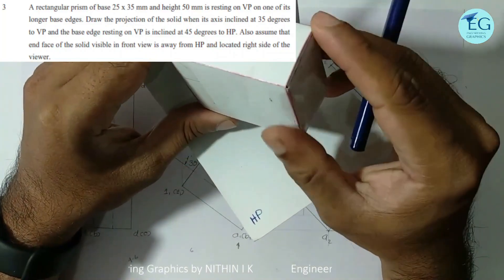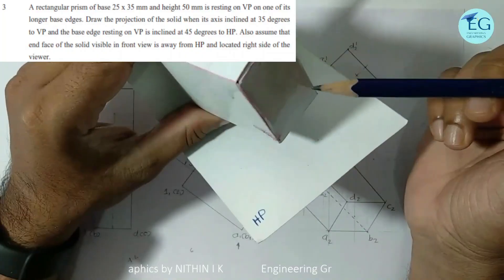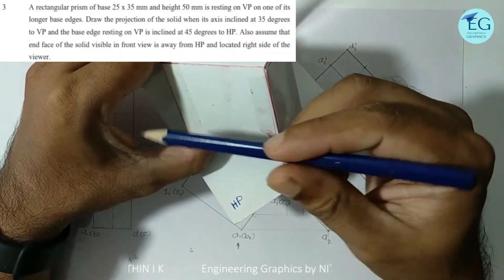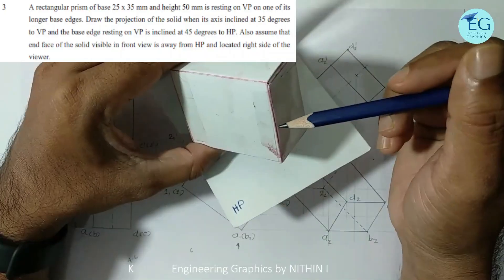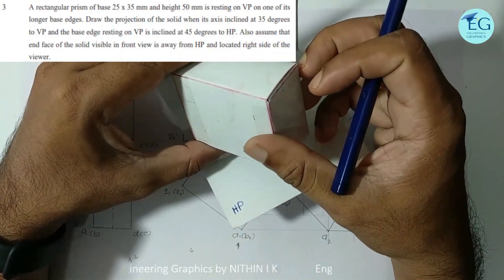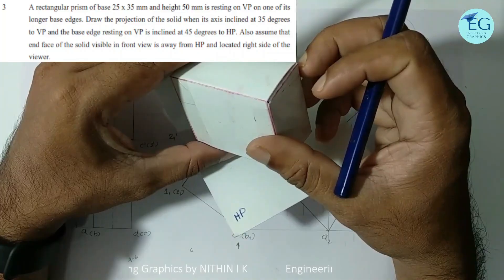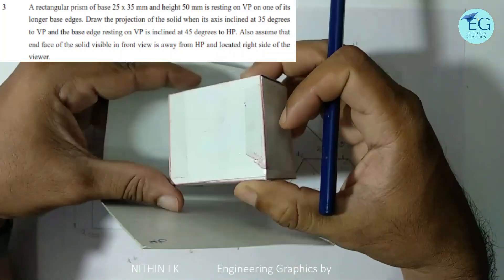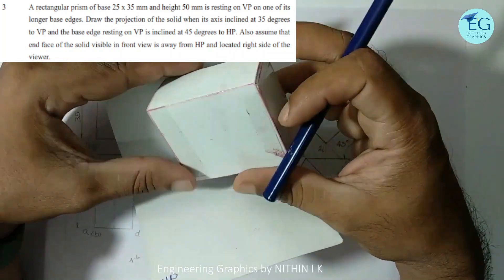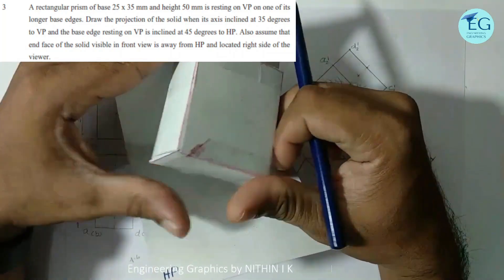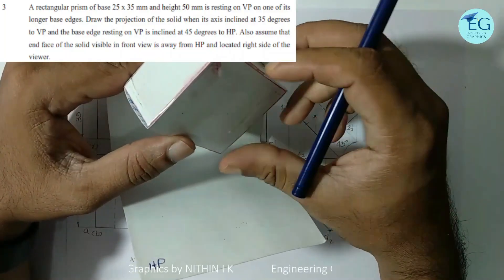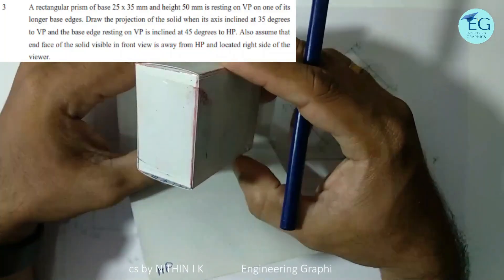Assume that the end face of the solid is visible in the front view. The end face here refers to the base. The visible base is the resting base. This base is away from HP and located on the right side of the viewer. If you have 45 degrees in the same direction, you can get 4 possible answers, but here we need to find 1 specific answer.